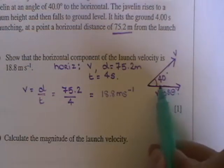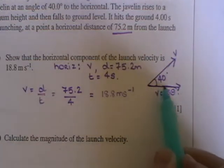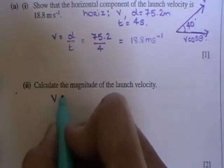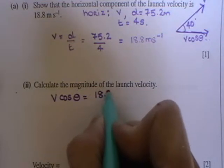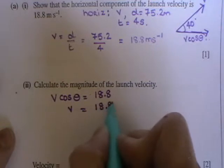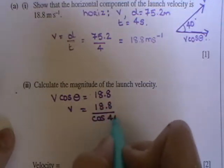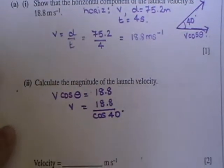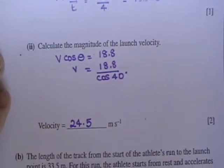We already know what this is equal to. This is equal to 18.8. And we also know that if we resolve our V here, it would be equal to V cos theta. So we can say that V cos theta is equal to 18.8, and theta is 40 degrees. So V equals 18.8 divided by cos 40 degrees, which gives you an answer of 24.5 metres per second.